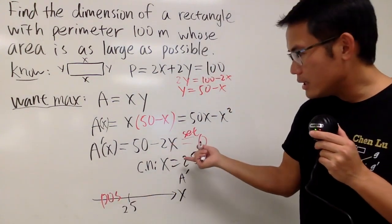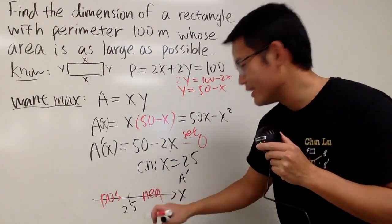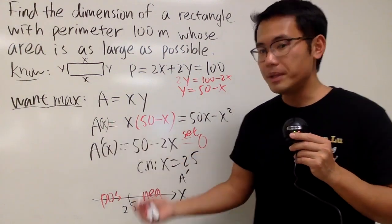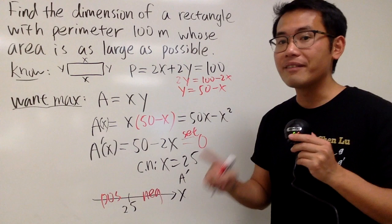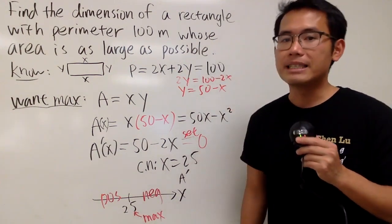Pick a number bigger than 25, you get, let's say, 27. You get negative. So this right here tells us our function is going to be increasing and then decreasing. So that means right here we have the maximum, right? So I will just indicate that this right here is indeed a maximum.